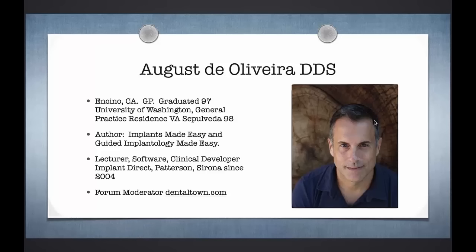Even in restoring them, I went through an evolution of just using stock abutments that the specialists torqued down for me with little snappy caps, and eventually getting into abutment-level and fixture-level impressions. I wrote a couple of books. My first book, Implants Made Easy, was a cookbook approach for GPs to learn how to start placing implants. My second book, which is a lot more popular, is on guided implantology. I also do lectures for Implant Direct, including a restorative course and a 3D implantology course at our facility in Las Vegas.